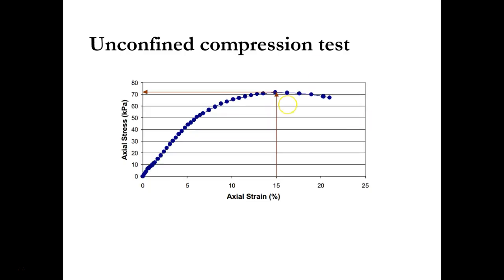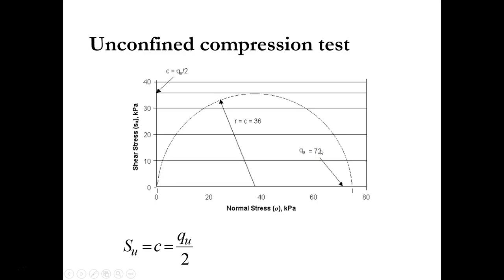From the previous graph, we can see that the maximum stress is 72 kilopascals. Since our confinement sigma 3 is 0 and our deviator stress is 72 kPa, our major principal stress sigma 1 will be 72 kPa. With sigma 3 equal to 0 and sigma 1 equal to 72 kPa, you can draw the Mohr circle, and the undrained cohesion will be half the diameter of the Mohr circle.